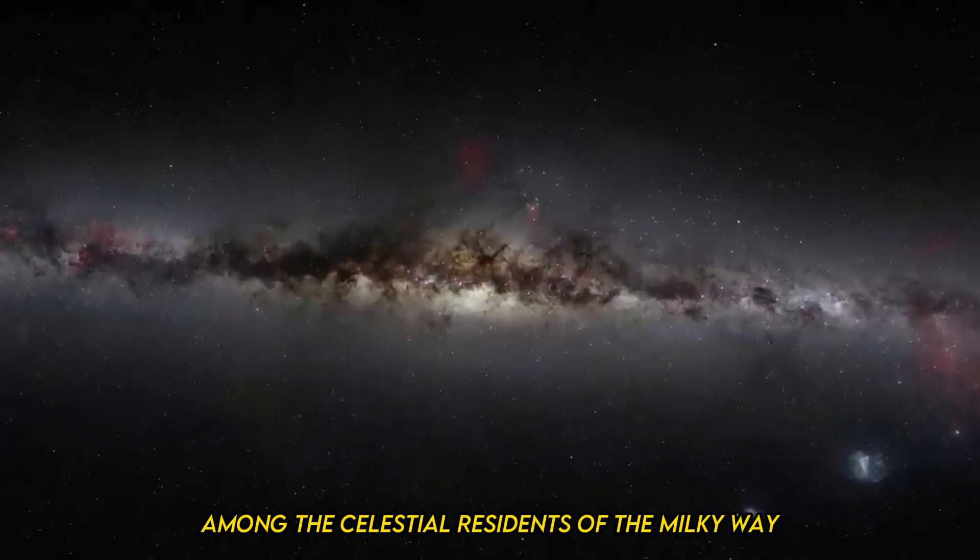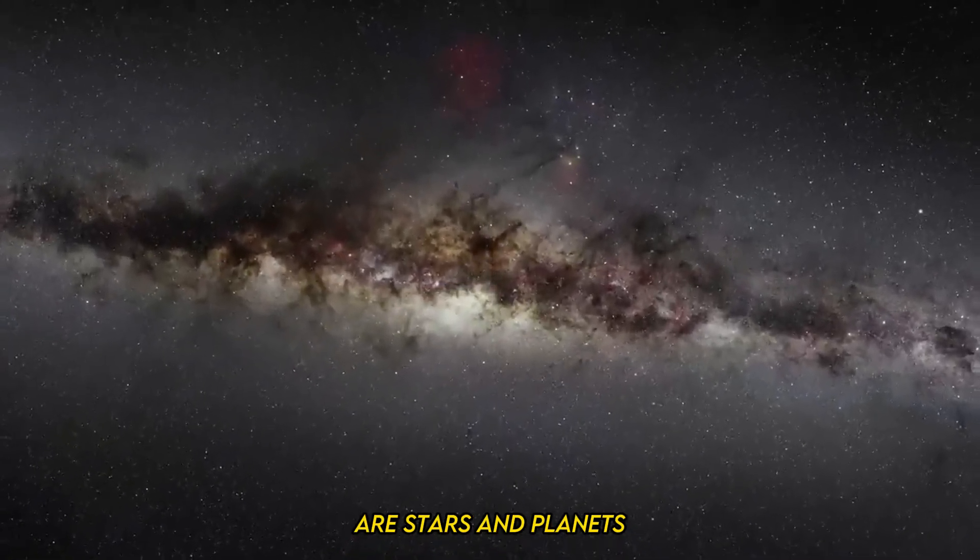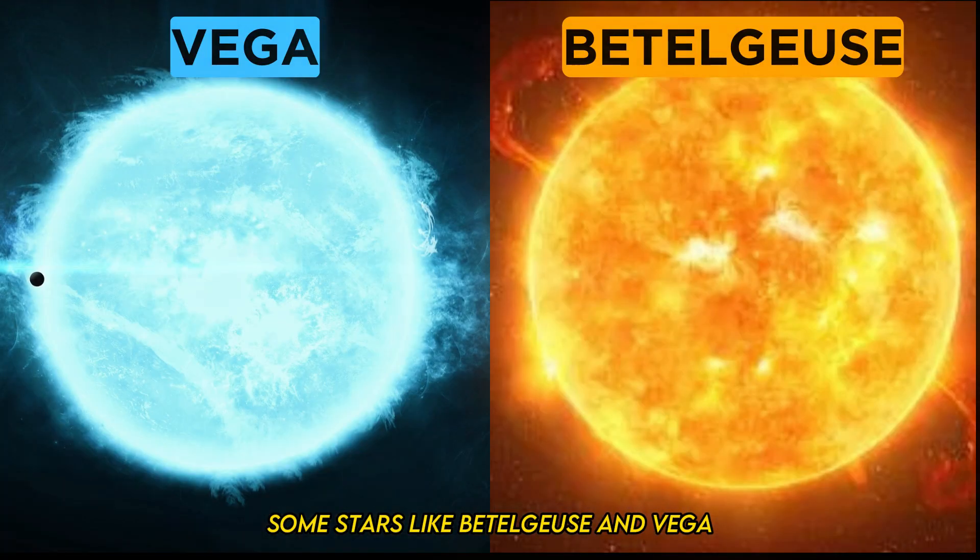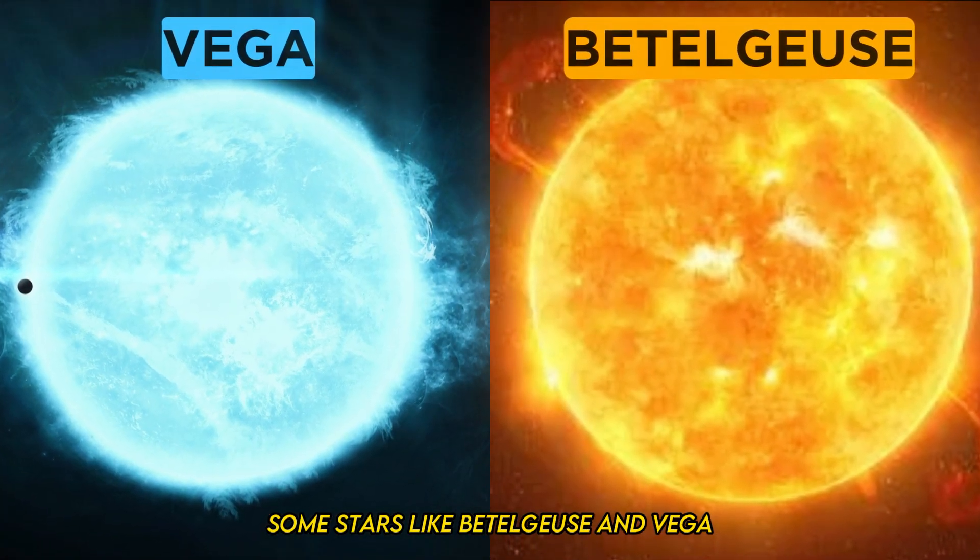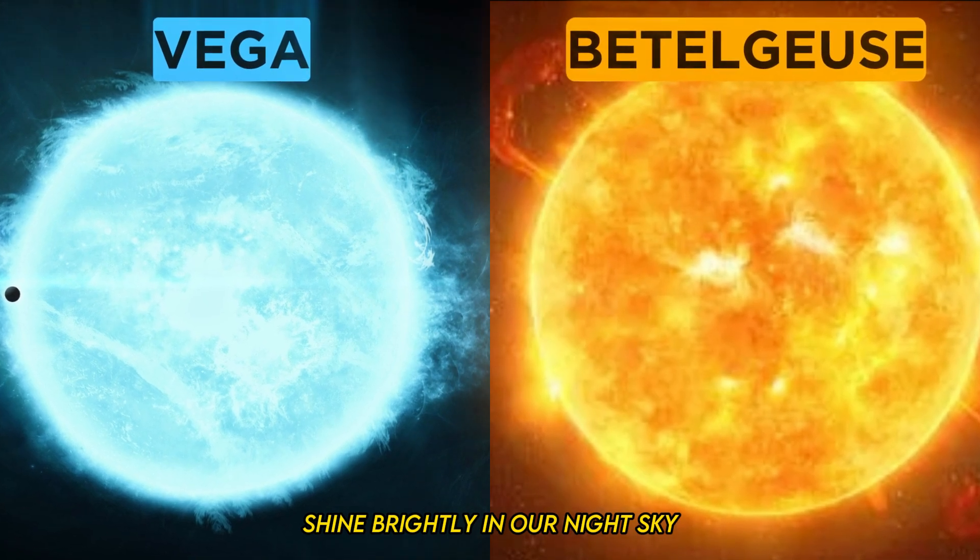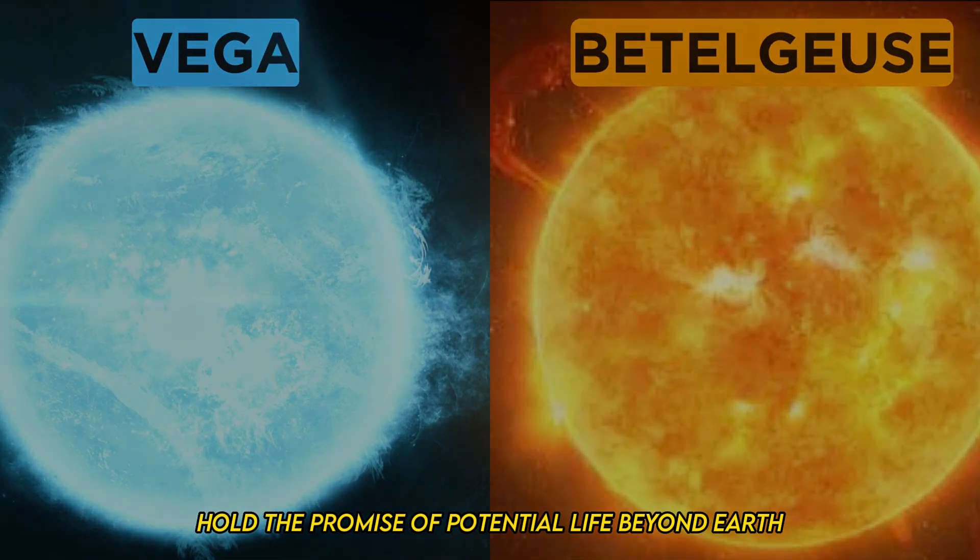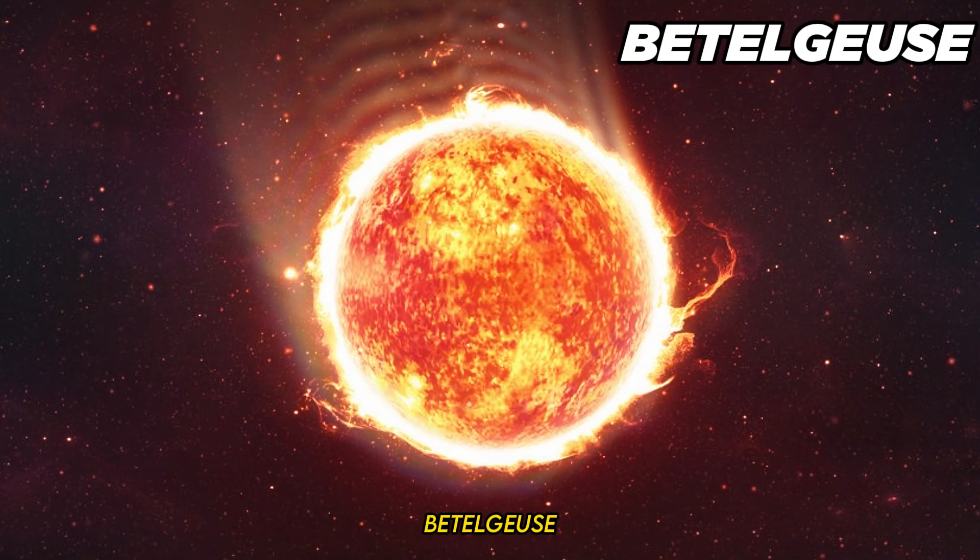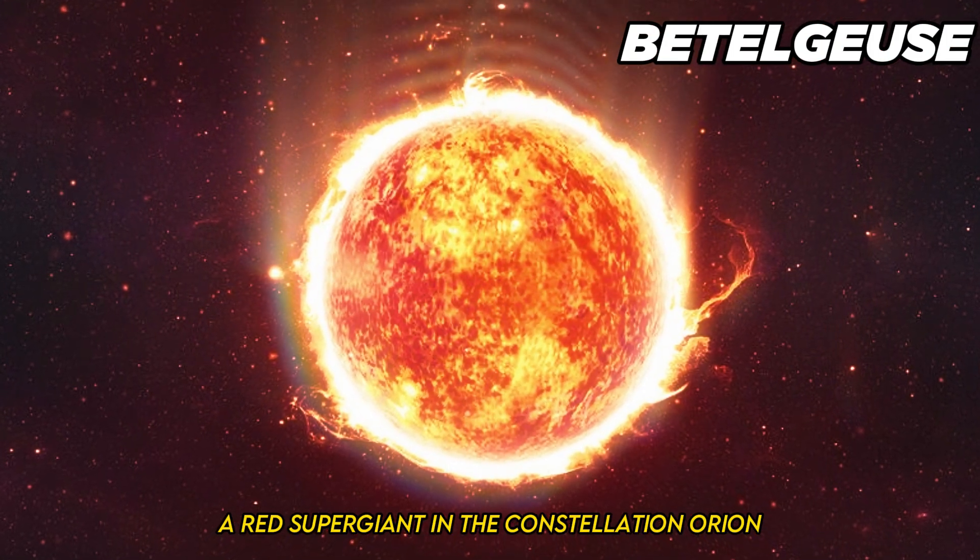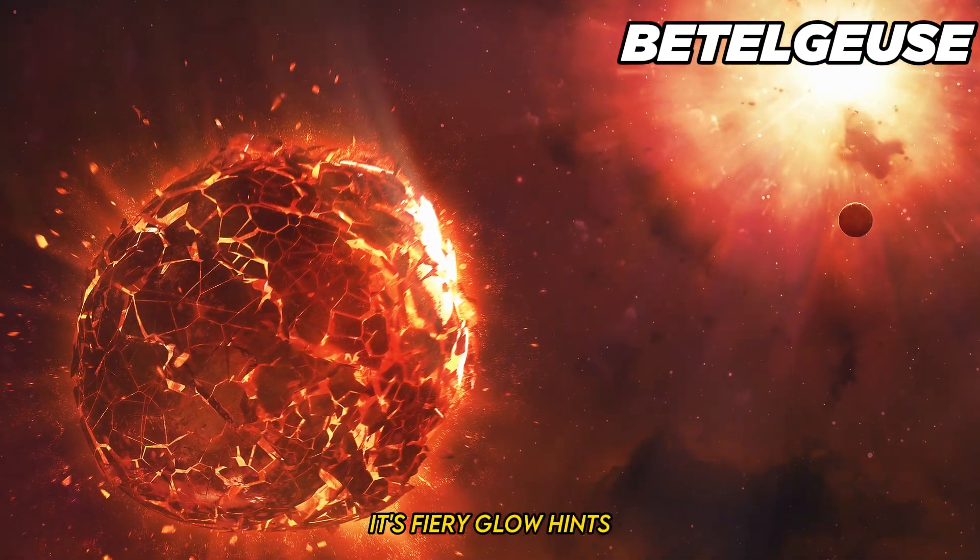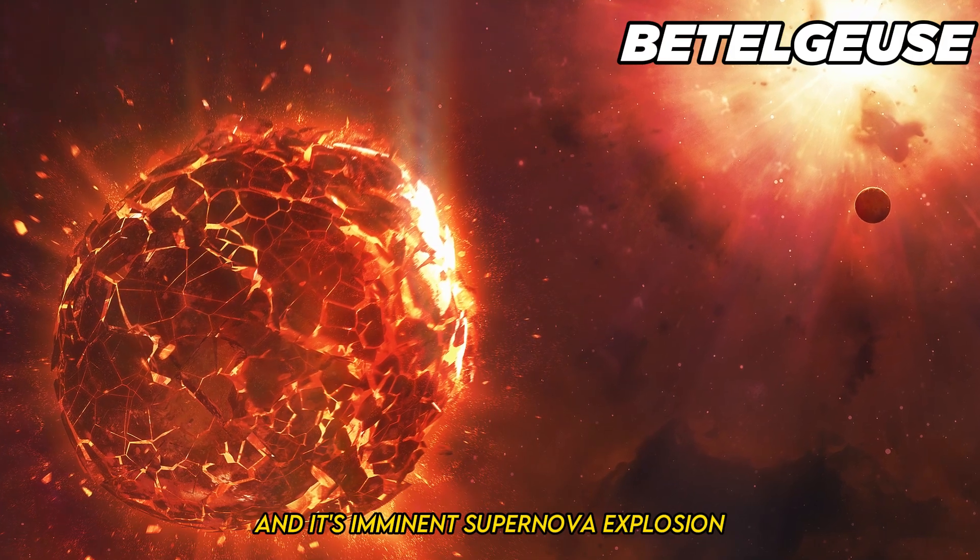Among the celestial residents of the Milky Way are stars and planets that have captured our imagination. Some stars, like Betelgeuse and Vega, shine brightly in our night sky, while exoplanets in the habitable zone hold the promise of potential life beyond Earth. Betelgeuse, a red supergiant in the constellation Orion, is one of the largest stars known. Its fiery glow hints at its imminent supernova explosion, an event that could be visible from Earth.